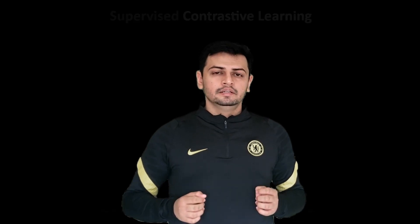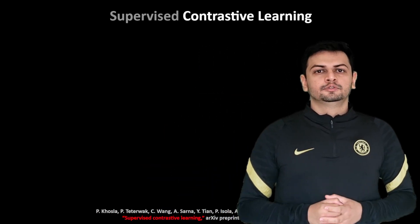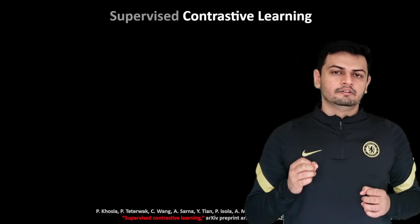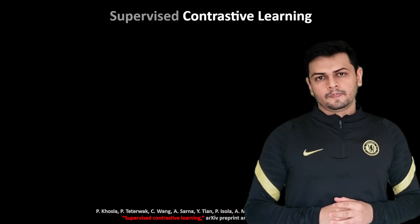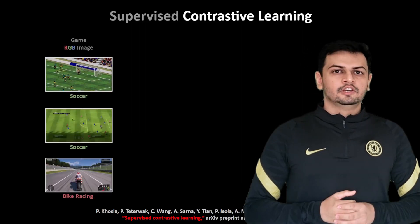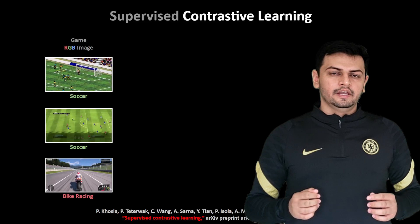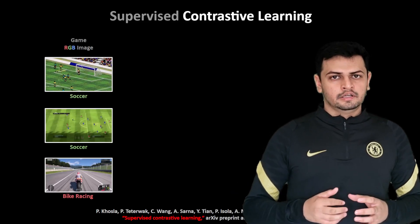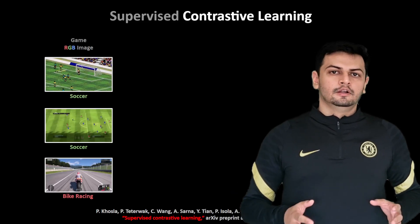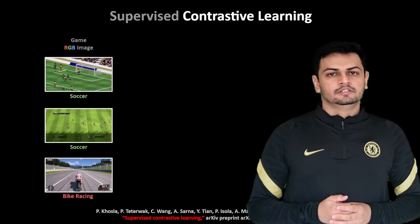Now that we have this dataset, let's look at the learning framework to train our neural network. We propose to use a supervised contrastive learning framework. Consider three images from our dataset where two of the images belong to the soccer genre and the third image belongs to the bike racing genre.